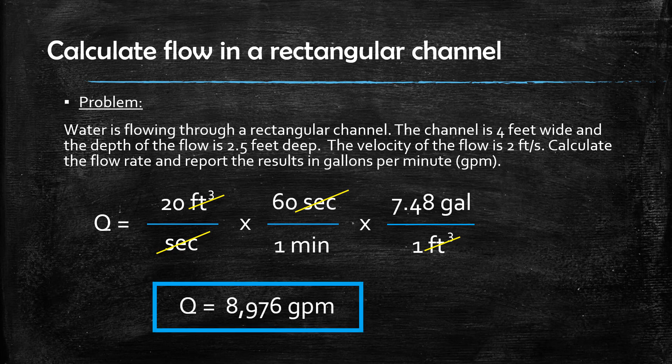The final result for this problem is that the flow rate through the channel is 8,976 gallons per minute.